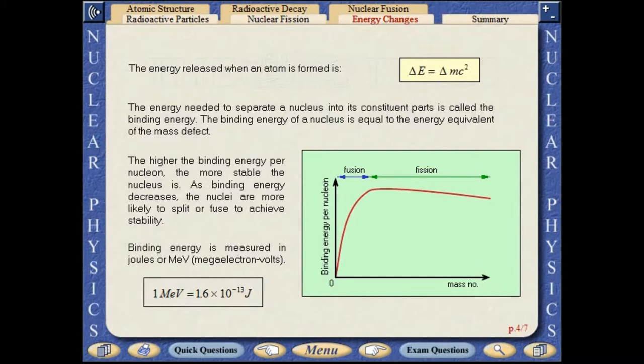As binding energy decreases, the nuclei are more likely to split or fuse to achieve stability. Binding energy is measured either in joules or mega-electron volts.